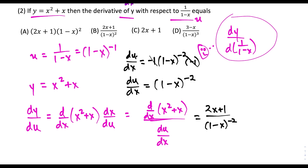None of the answer choices have a negative exponent, so I rewrite this: (2x plus 1) times (1 minus x) to the second power — and this matches choice A.